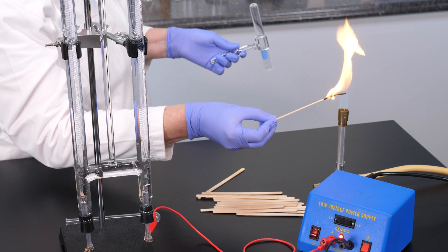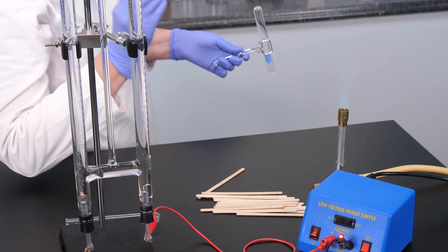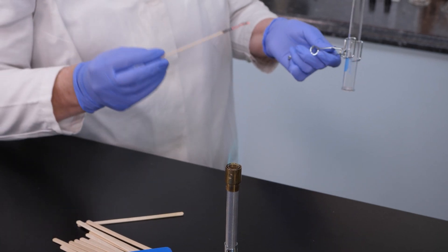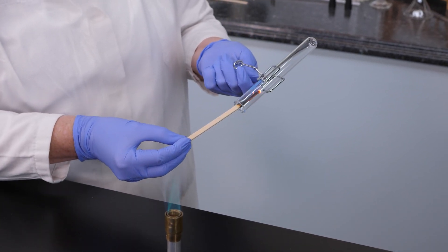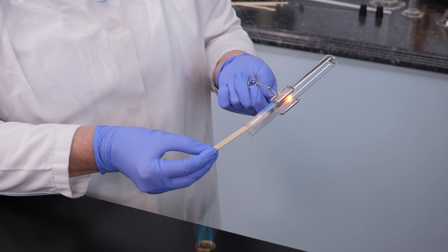We also used a wood splint to prove we collected oxygen gas. The oxygen in the test tube reignited the flame on the glowing wood splint, proving we had collected oxygen. By using electrolysis, we were able to decompose water into its component elements.